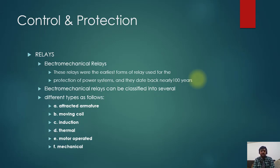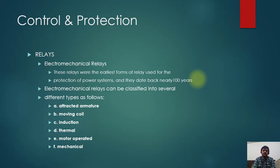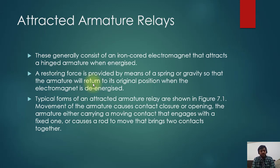The initial relays like electromechanical relay LRB as of 1896 were jointly produced by electrical engineers and watchmakers — this is a very interesting thing. Electromechanical relays can be classified into several types: attracted armature relay, moving coil relay, induction relay, thermal relay, motor operated relay, and mechanical relay.